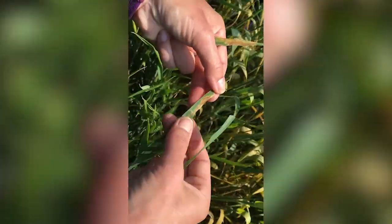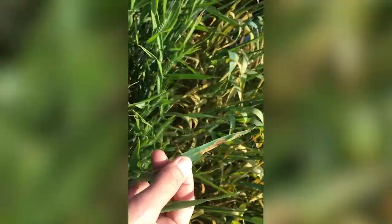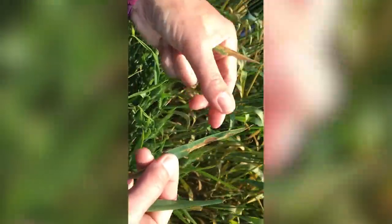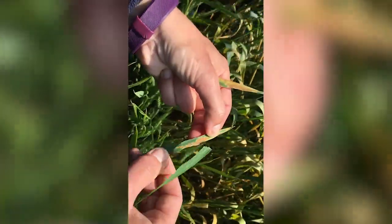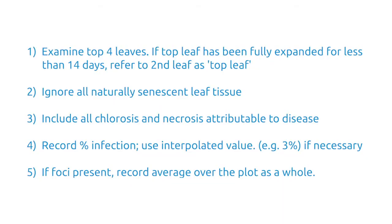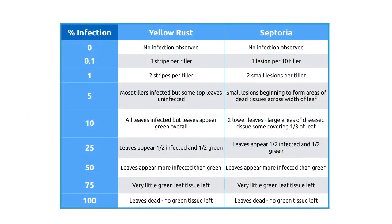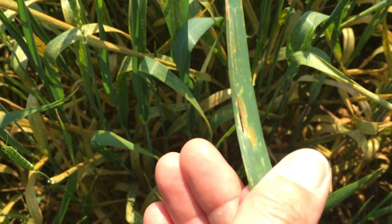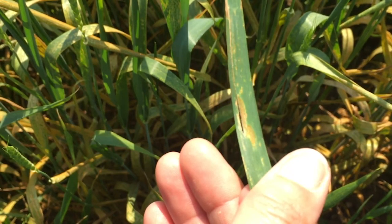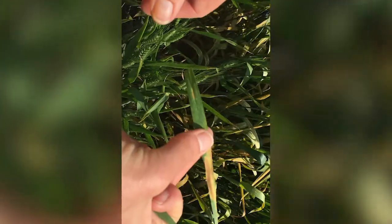Septoria sometimes has a chlorotic halo, but you're just looking for that necrotic or silvery lesion — always have a look to see if you can see pycnidia within the lesion. The septoria scale is really nice and easy: one percent is two small lesions per tiller, and then you have a small lesion beginning to form areas of dead tissue across the width of the leaf. Septoria tends to constrict the leaf as well, whereas yellow rust doesn't.